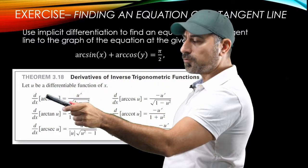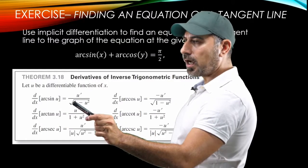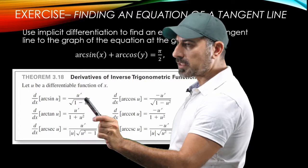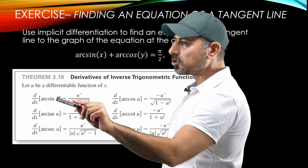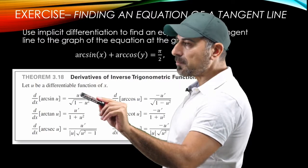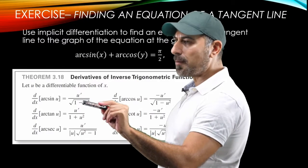And the formula for the derivative of arc sine is u prime over radical one minus u squared. But here we take the derivative with respect to x. So u is going to be just x and x prime is going to be one. This formula will be one over radical one minus x squared.